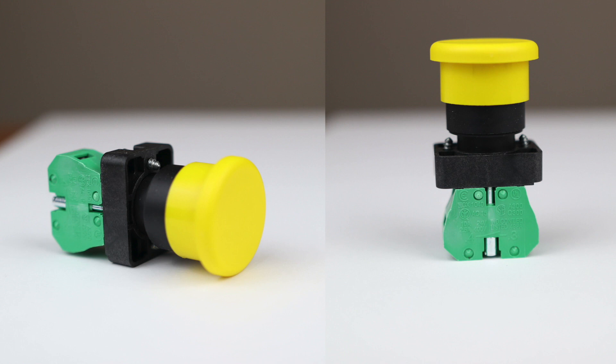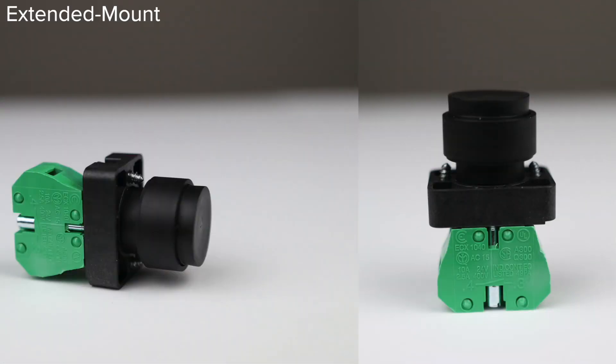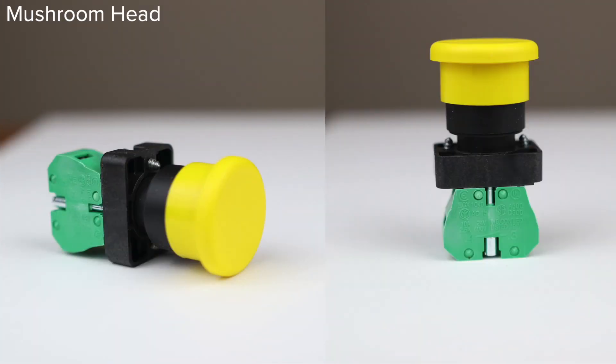As we go through these push buttons, take a look at how they are designed. The flush mount push buttons are often used for protection from accidental initiation. Extended mount push buttons are used for easier activation since the actuator sticks out about a quarter of an inch beyond the mounting ring. The mushroom head push buttons have larger actuators that are easily seen and actuated and therefore are used in emergency push buttons.